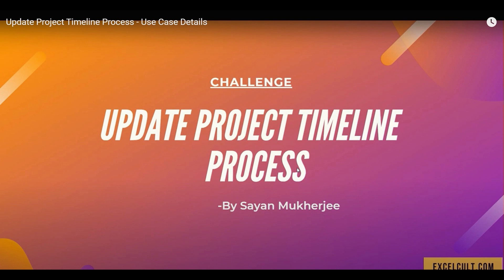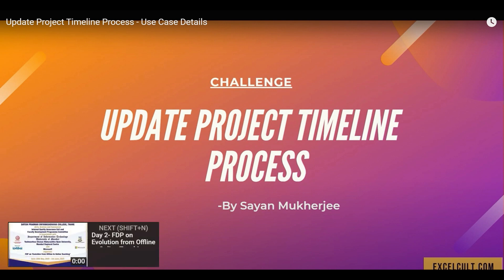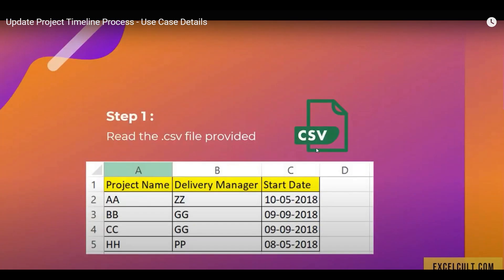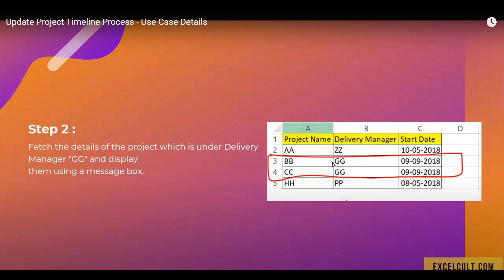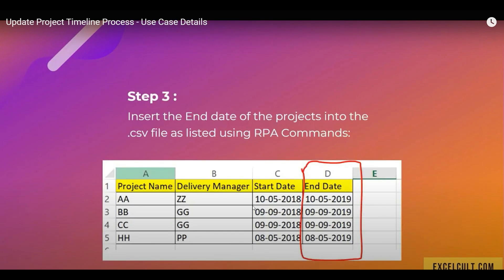Today we'll be working on a challenge called 'Update Project Timeline Process.' As a first step, we have a CSV file with project name, delivery manager's name, and start date. In step two, we fetch data where the delivery manager is 'ZZ', along with project name and start date. In step three, we insert a new column called 'end date' where 2018 dates are replaced with 2019.